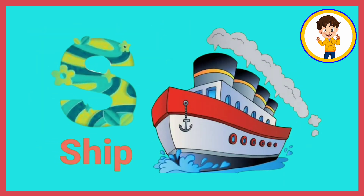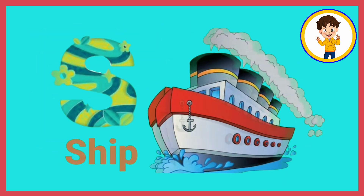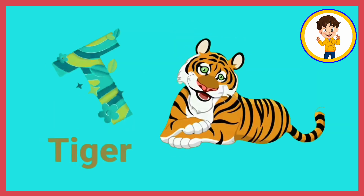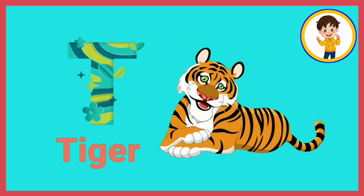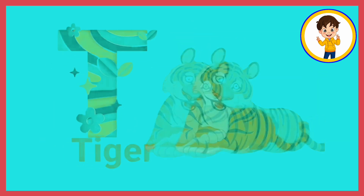S. S for ship. Ship means samundari jhaaj. T. T for tiger. Tiger means bug.